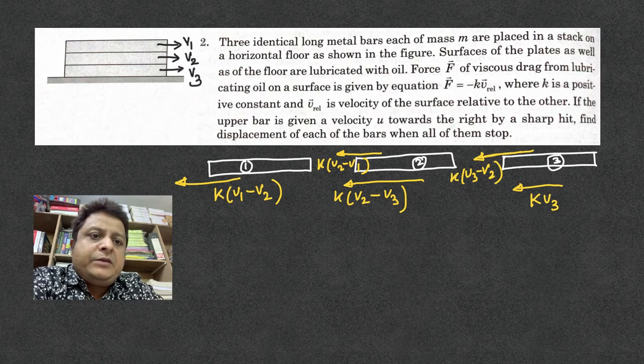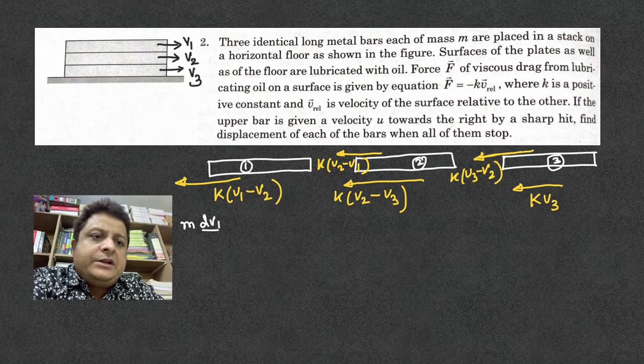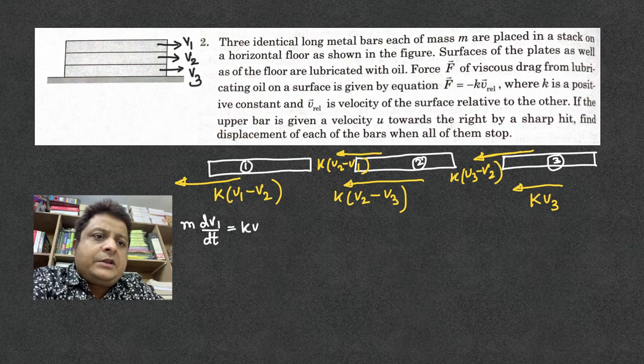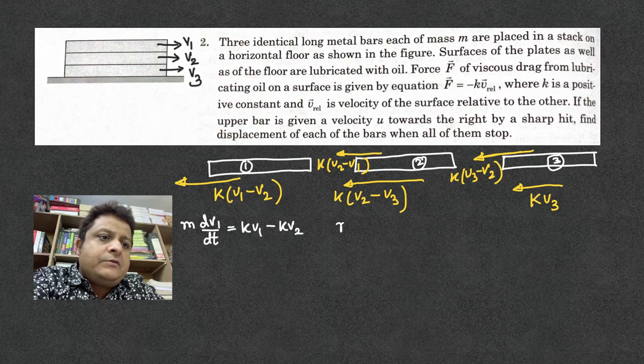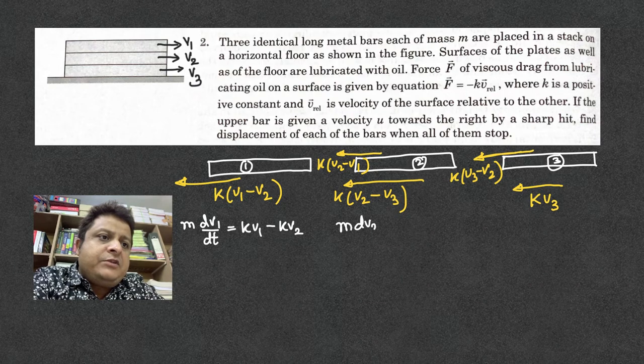Now we'll write the equations. m dv1/dt = k(v1 - v2). Same way for the second one, m dv2/dt...